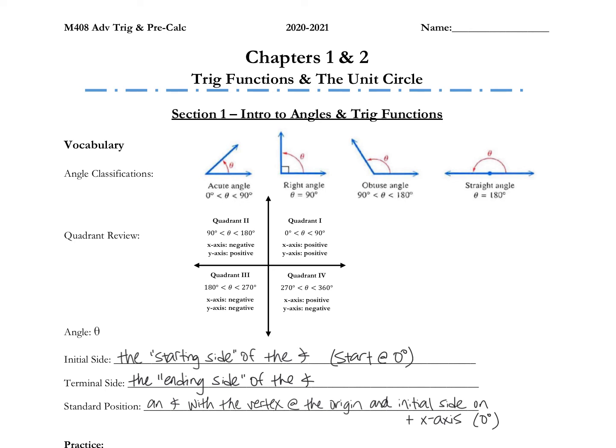Some angle definitions and things that you should have learned in geometry class. We've got a right angle that's 90 degrees. The difference between acute and obtuse: I think of an acute angle as cute — it's small, it's less than 90. An obtuse angle, I think of the word obese — it's bigger than 90 degrees, so between 90 and 180. And then a straight angle is the 180 degree angle.